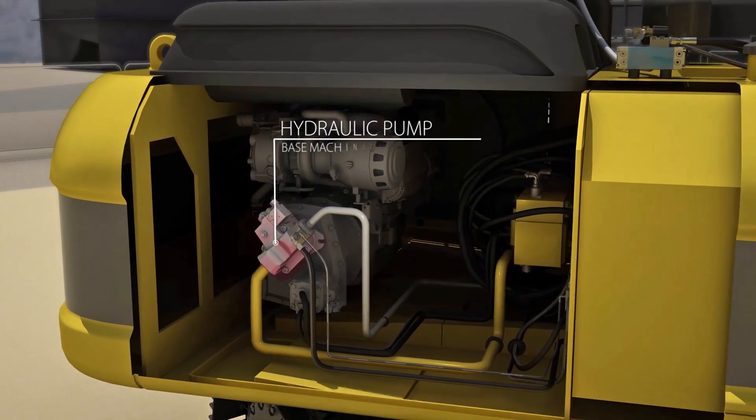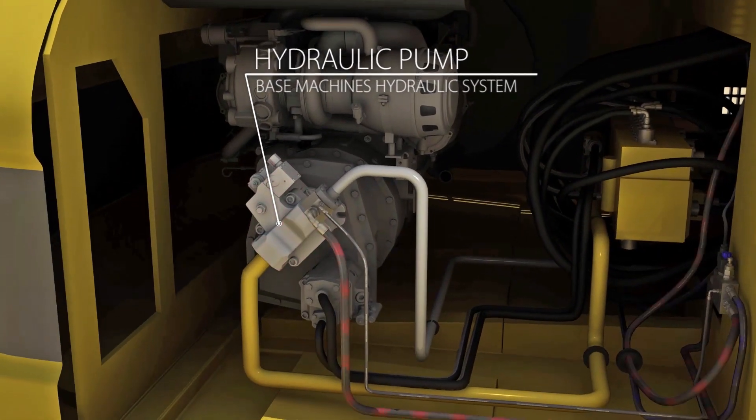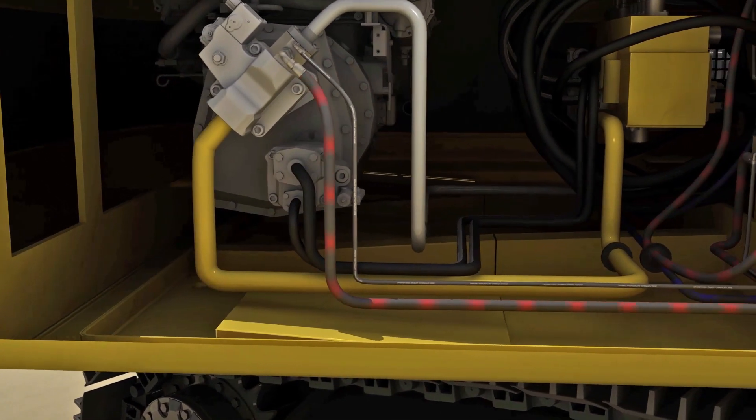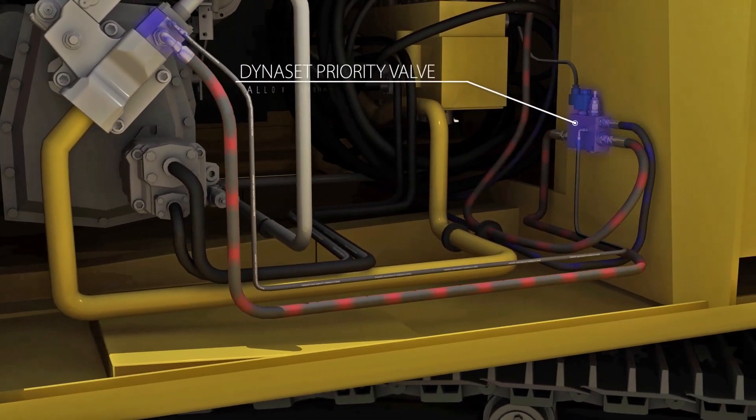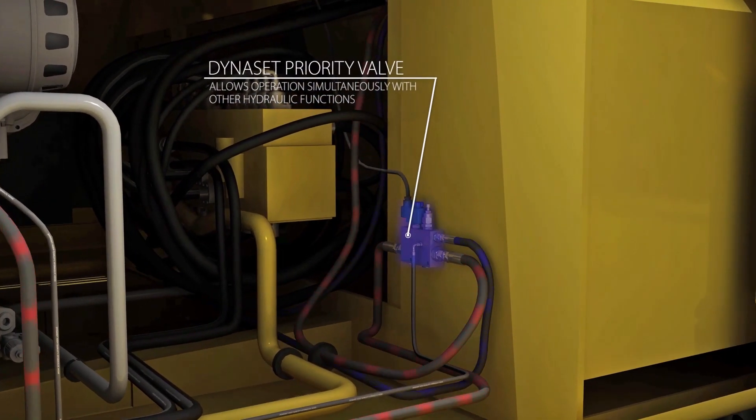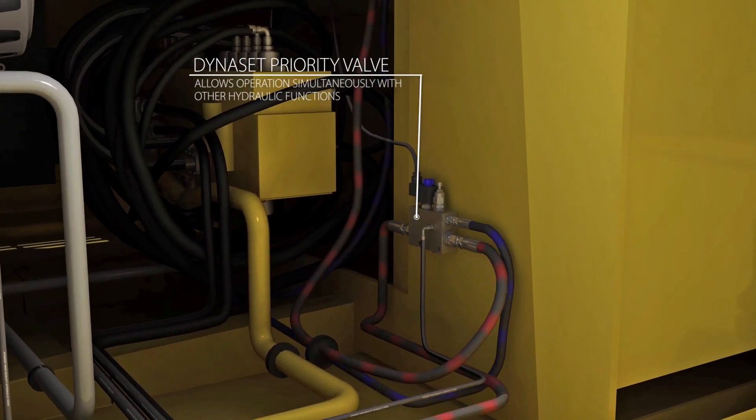The HBWDust uses the power from the base machine's hydraulic system. It is typically installed into the base machine's existing hydraulic lines with Dynaset PVSR priority valve kit. The priority valve allows operation simultaneously with other hydraulic functions of the machine.